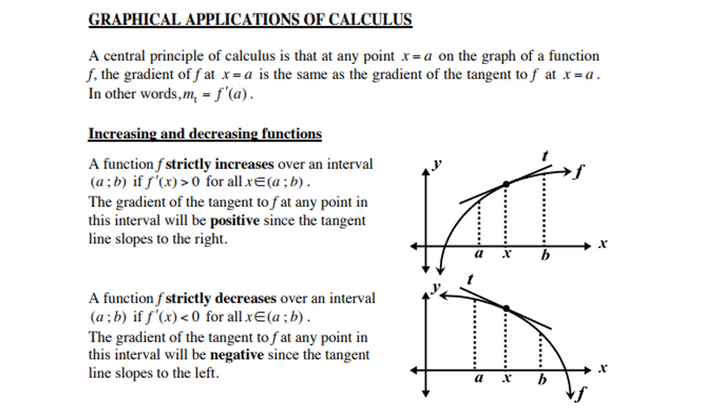A function strictly decreases over an interval (a, b) if f'(x) < 0 for all x in (a, b). The derivative must be negative, and if the derivative is negative, that means the gradient is negative.